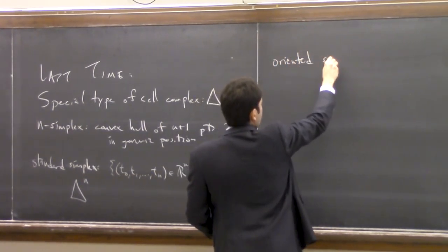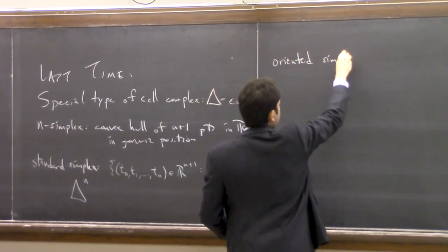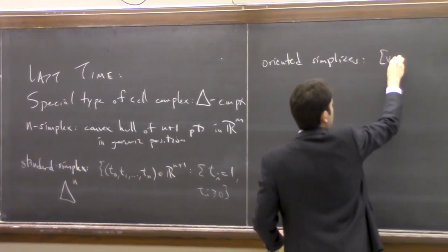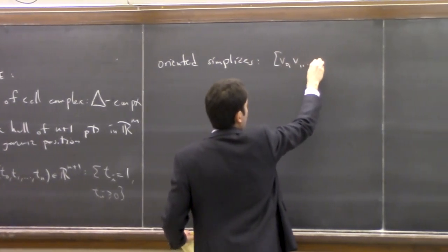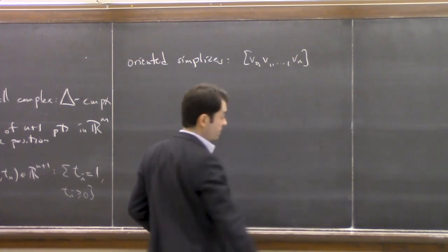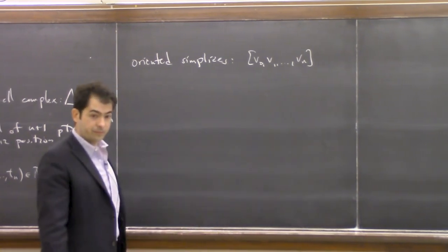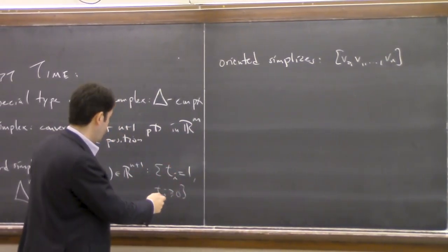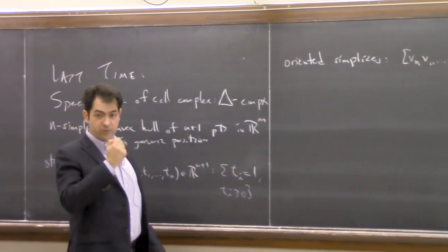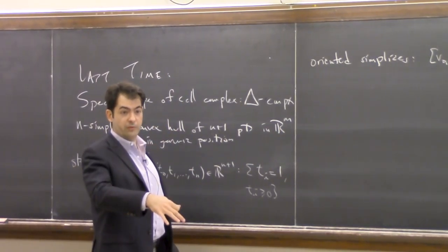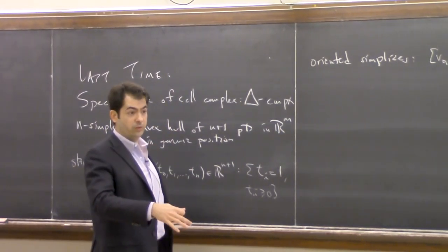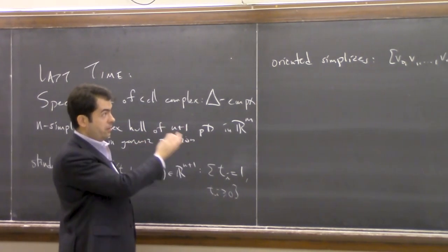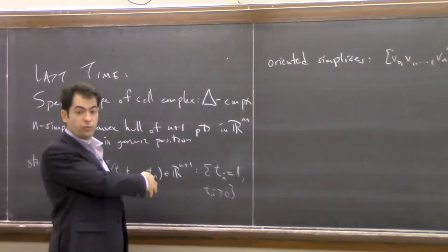We talked about oriented simplices by just putting an order on the vertices. We saw that a face — which is what you get when you remove one vertex and look at the convex hull of the remaining ones — inherits an orientation from the one on the total space.